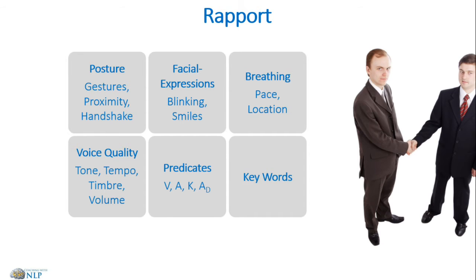Then of course there are words, which make up the 7% of our communication. These include predicates — what types of words is my client using? If they say 'can you see that?' or 'what does it appear like?' those are visual predicates. Someone who says 'that feels great' or 'I want to get a grasp of it' is using kinesthetic predicates. 'It needs to make sense' is an auditory digital predicate. I want to listen to the types of predicates my client uses so I can use the best ones for them.